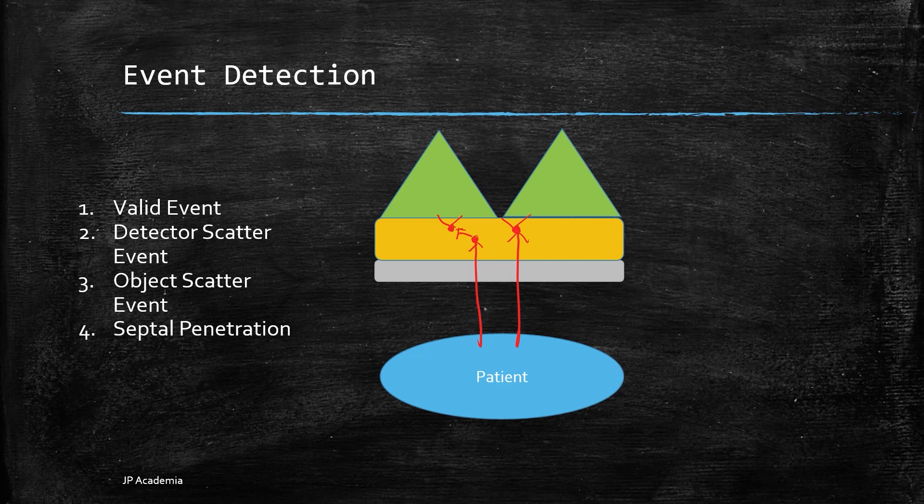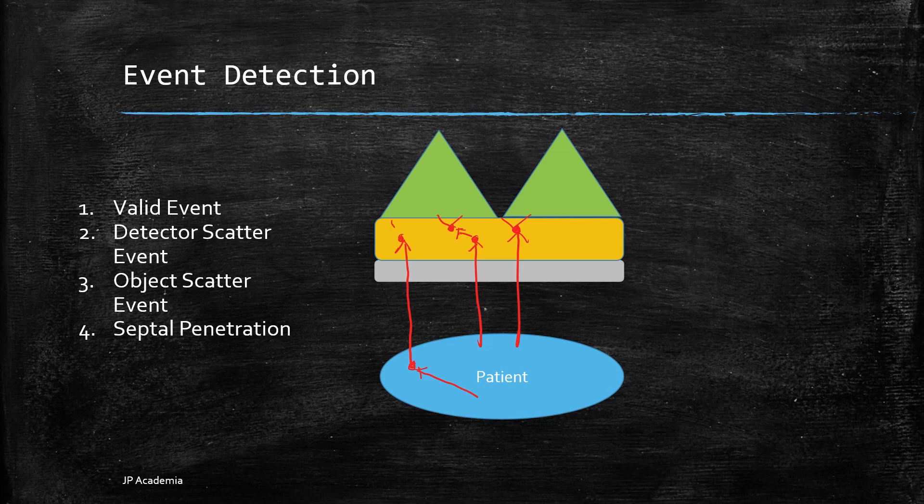Third event is the object scatter event, illustrated inside the patient before it interacts with your crystal. The gamma ray is not emitted toward the collimator holes but scattered within the body first, then it passes through the collimator and subsequently detected by the system.